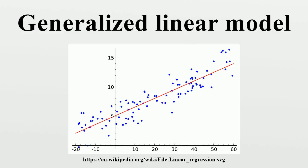Binary data. When the response data y are binary, the distribution function is generally chosen to be the Bernoulli distribution, and the interpretation of mu_i is then the probability p of y taking on the value 1. There are several popular link functions for binomial functions; the most typical is the canonical logit link. GLMs set up this way are logistic regression models. In addition, the inverse of any continuous cumulative distribution function can be used for the link, since the CDF's range is the range of the binomial mean. The normal CDF is a popular choice and yields the probit model. A constant scaling of the input variable to a normal CDF yields a function that is practically identical to the logit function, but probit models are more tractable in some situations than logit models.